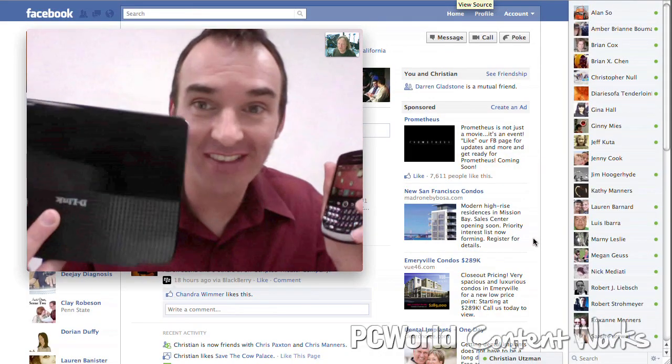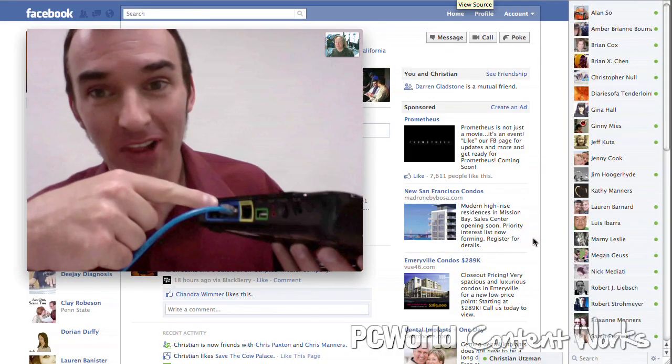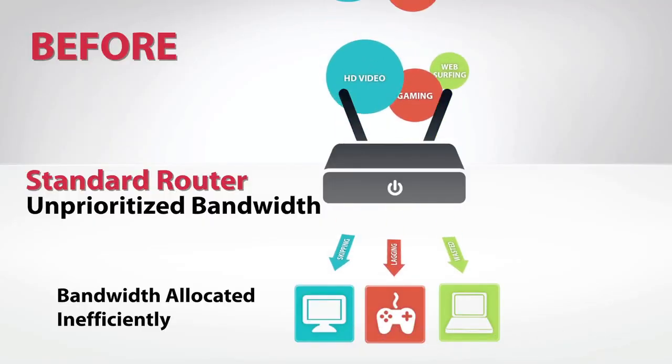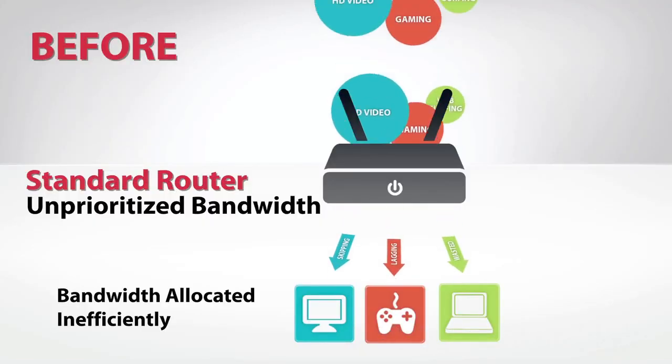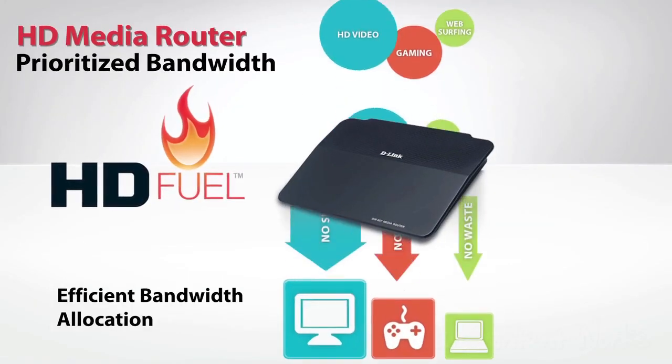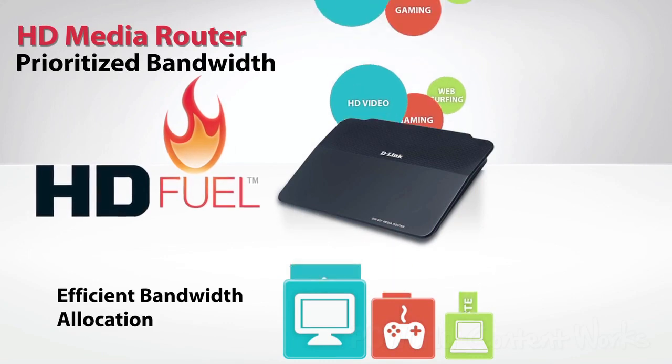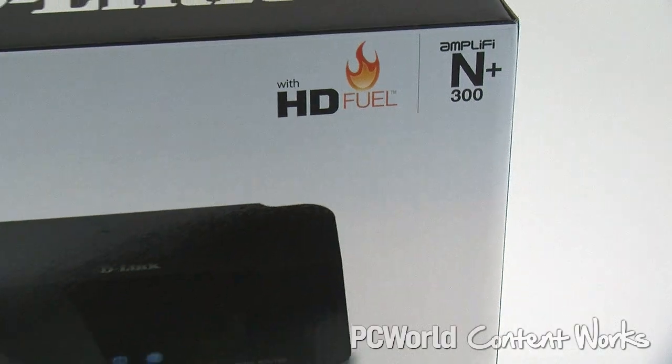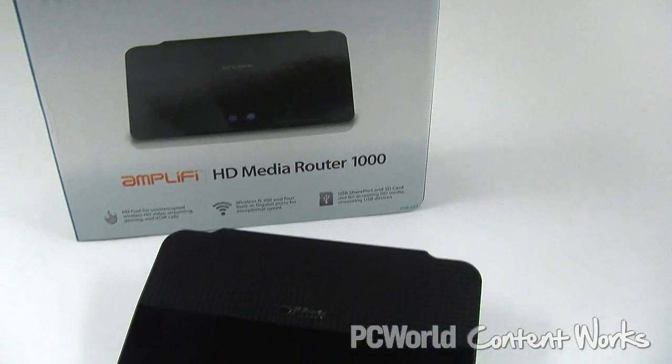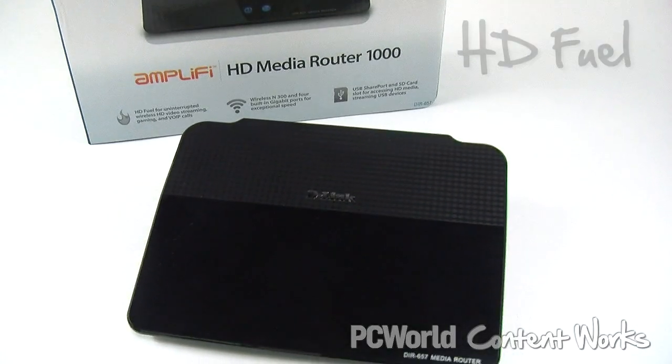If you are in a video chat, the last thing you need is interference from a housemate downloading the latest blockbuster movie. A router's priority setting lets you allocate bandwidth to services that need it most. Here's good news. D-Link's HD Media Router 1000 with HD Fuel technology manages network traffic automatically to make sure critical bandwidth-intensive applications get the highest priority.